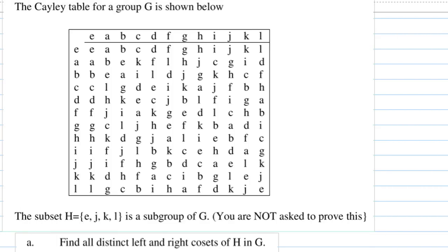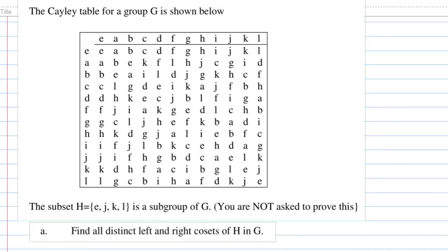For this recording, I'm going to show you how to find the coset of a subgroup of a group G. We are given the subgroup H = {e, j, k, l} of G, where the Cayley table of G is given. We are going to find all the distinct left and right cosets of H in G.